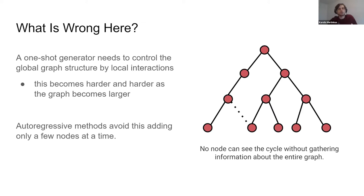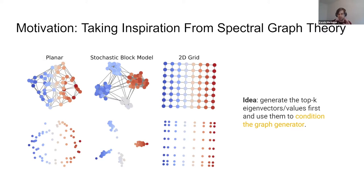Our idea is to deal with the high-level structure separately — ensuring there's a certain number of clusters in the graph, then filling in the given template. For this, we look at spectral graph theory. We visualize the embeddings of the normalized Laplacian eigenvectors — specifically the first two — for some given graphs. As you can see, they correspond to some sort of clustering, or usually provide a smooth distribution of points. So the idea is: maybe you can pick a graph generator and condition it on the first few eigenvectors, generating new graphs where the generator only needs to account for local interactions, because global interactions are given by the spectral embedding.